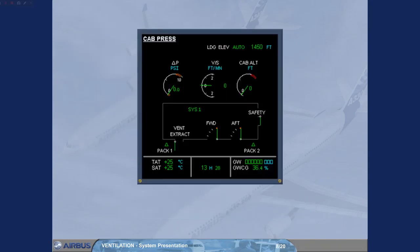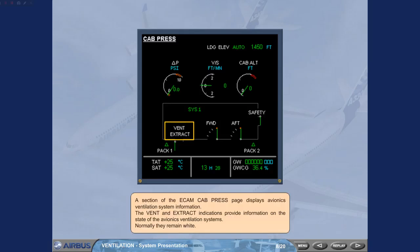A section of the ECAM CAB PRESS page displays avionics ventilation system information. The vent and extract indications provide information on the state of the avionics ventilation system. Normally they remain white.